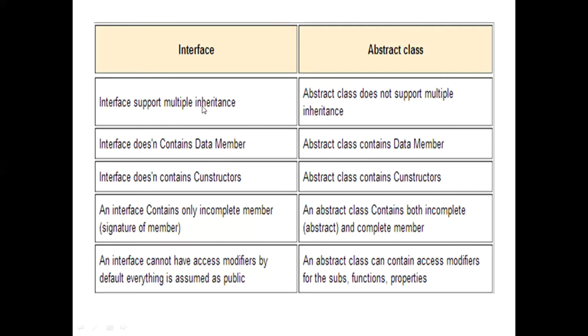First is that interface supports multiple inheritance while abstract class does not support multiple inheritance, because it is generally a class and through class you cannot support multiple inheritance in PHP.